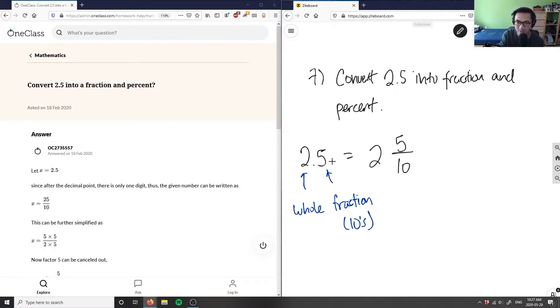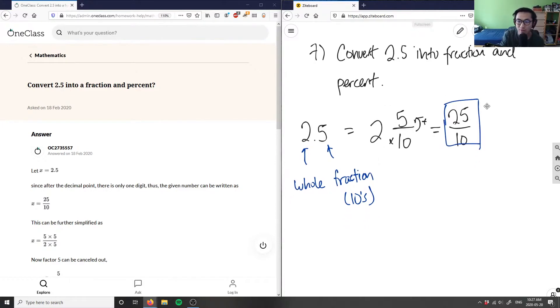Now I can convert this mixed fraction into an improper fraction by multiplying the whole number. So 2 times 10 is 20, and I'm going to add the numerator. 2 times 10 is 20 plus 5 equals 25 over 10. This is 2.5 in fraction form.